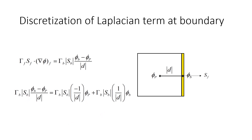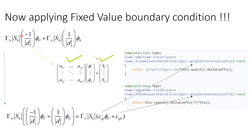So phi_p and phi_b are separated out. There is one term multiplied with phi_p, and one term that is already known, multiplied with phi_b, since phi_b was explicitly mentioned. The phi_b term contributes to the source matrix, and the term multiplied with phi_p contributes to the coefficient matrix. So after discretization of this Laplacian term, both matrices — coefficient and source — receive contributions.